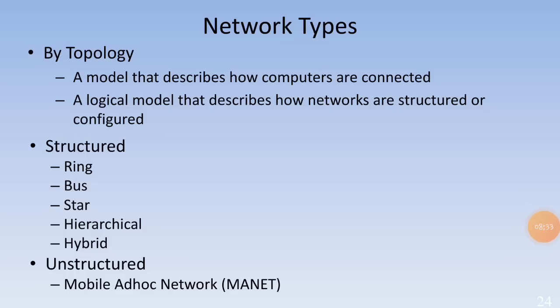Network types: First is topology — a model that describes how computers are connected, and a logical model that describes how networks are structured or configured. Structured topologies include ring, bus, star, hierarchical, and hybrid. The third category is interactive: mobile ad hoc network (MANET).